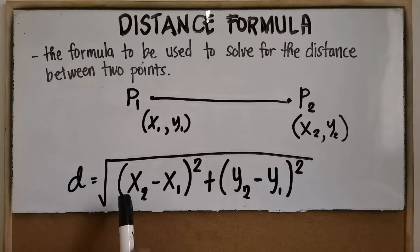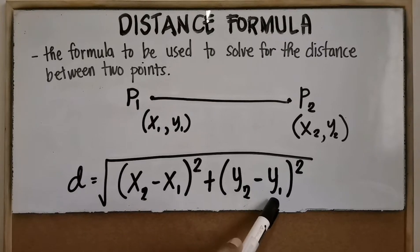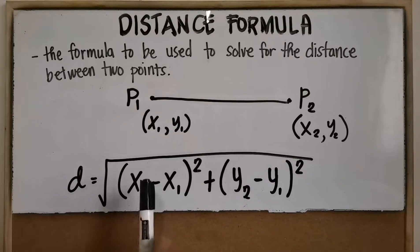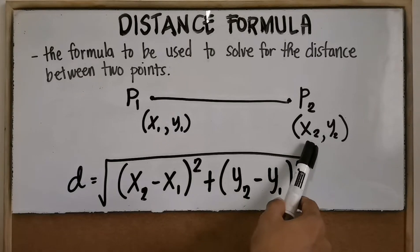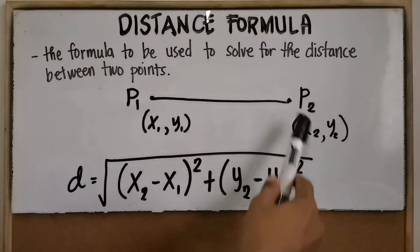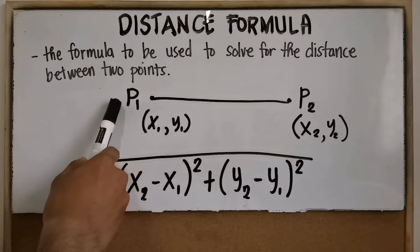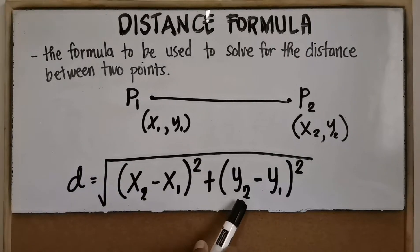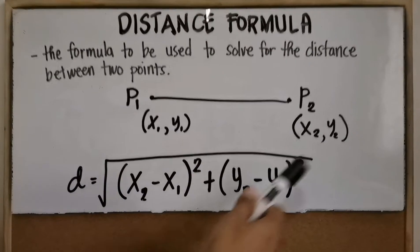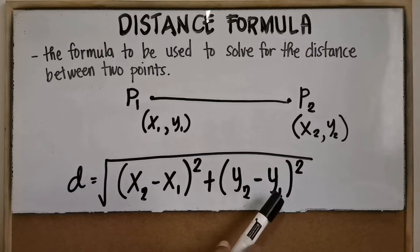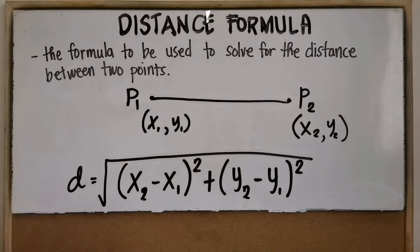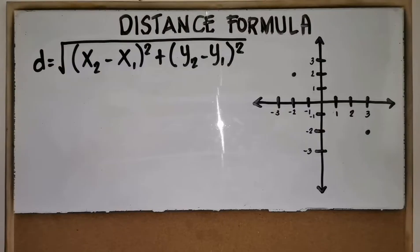To use this formula, substitute the variables: x sub two comes from the x of your second point, while x sub one comes from the x of your first point. Y sub two comes from the y of your second point, while y sub one comes from the y of your first point.